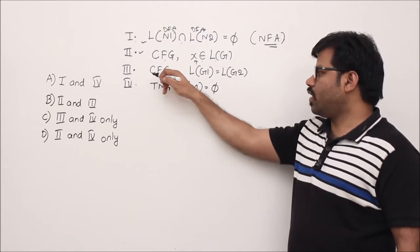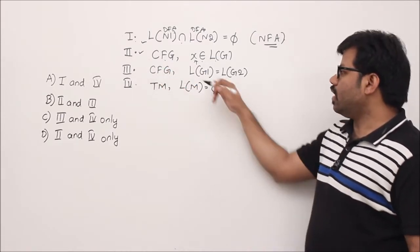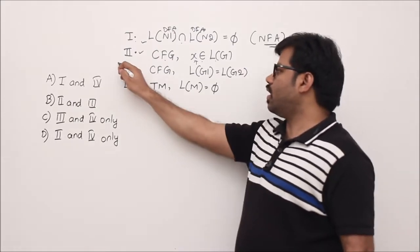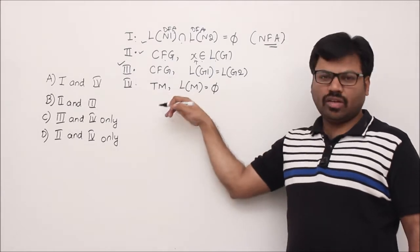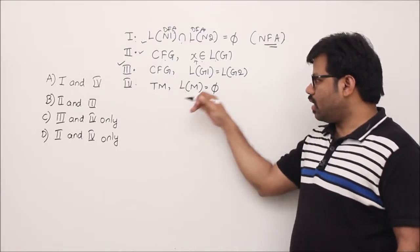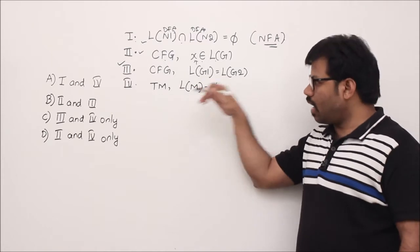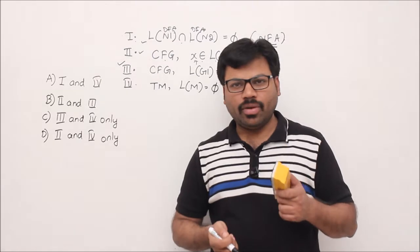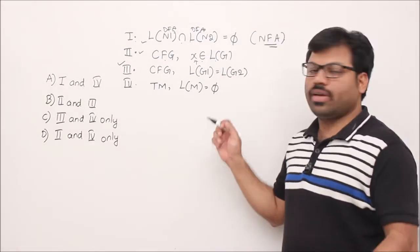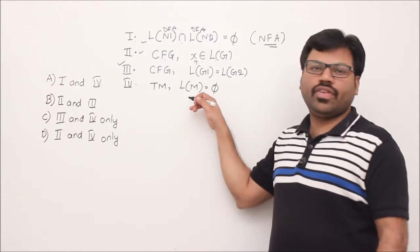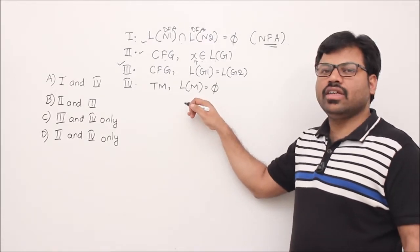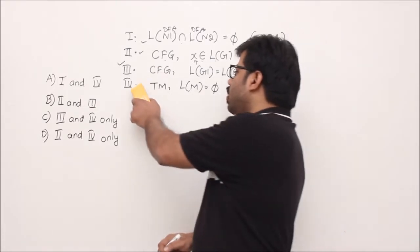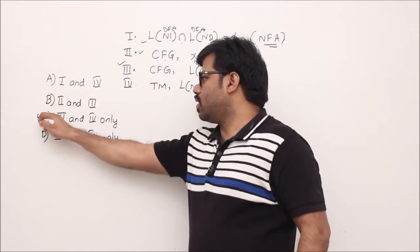Given two context-free grammars, whether those grammars generate the same language or not is undecidable. Fourth: given a Turing machine — that means given an RE set — whether the language accepted by that Turing machine is empty or not. By Rice's theorem, every non-trivial property of an RE set is undecidable. So three and four are not decidable; the correct answer is C.